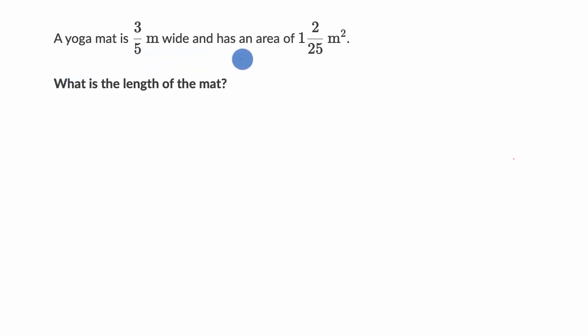We're told a yoga mat is three-fifths of a meter wide. It has an area of one and two-twenty-fifths square meters. What is the length of the mat?